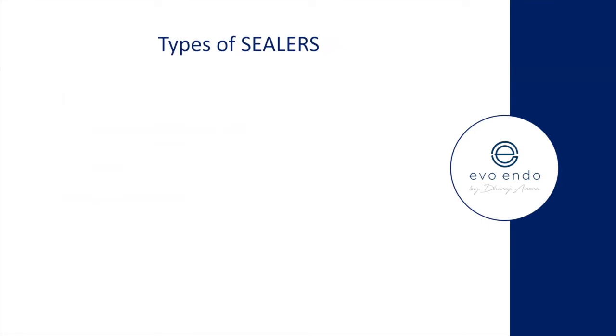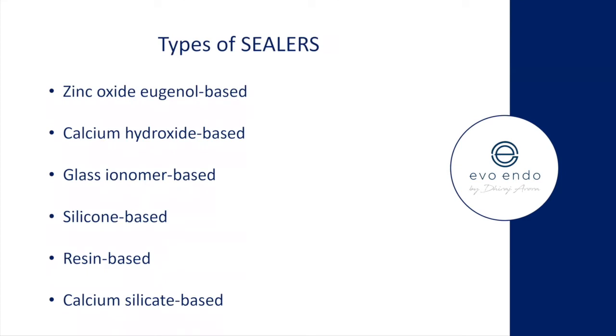Types of sealers: zinc oxide-based, calcium hydroxide-based, GIC-based, silicon-based, resin-based, and calcium silicate-based sealers. My advice: know what you use and why, and what its properties are. If you don't know what you're using, you don't know how it's going to predictably seal the root canal system.